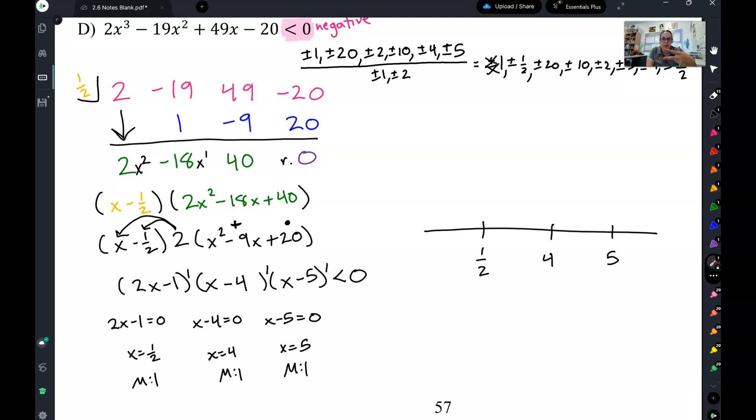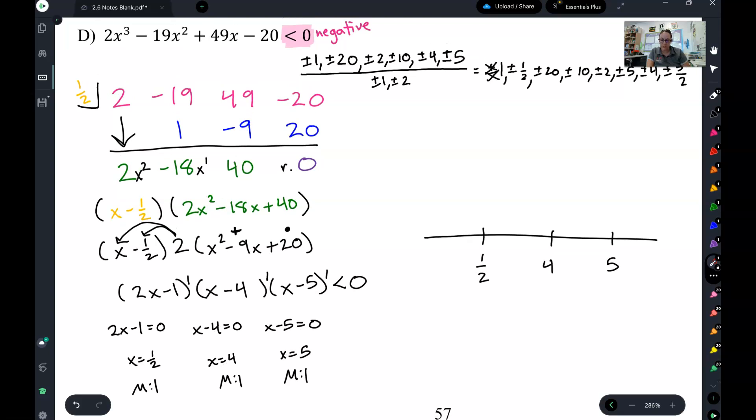Second thing I want you to get in the habit of checking is if you have a negative leading coefficient. We look up here, it is a positive two. So I do not have a negative leading coefficient. If you did, you would put that line of negatives up at the top. So I don't have any negative leading coefficients, don't have any multiplicities. So I can just write my x intercepts over here on the side and do my number lines.